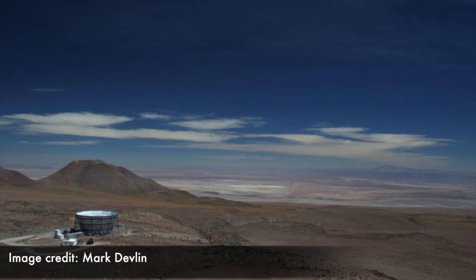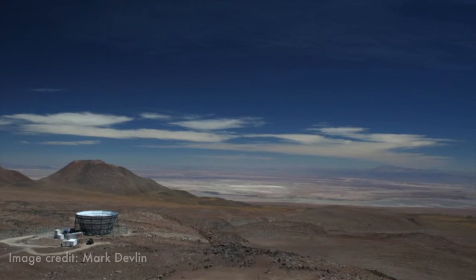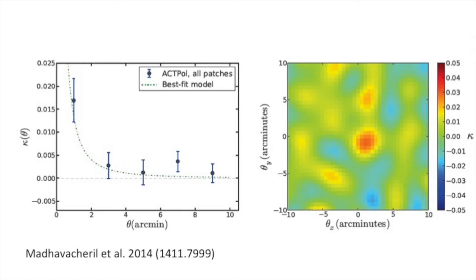We use data from the Atacama Cosmology Telescope, which maps out the CMB. By performing a mathematical procedure on these maps at the location of known groups of galaxies, we were able to determine the amount of lensing due to these groups of galaxies, and from that, determine their average mass.